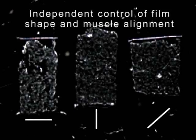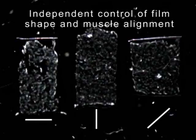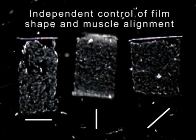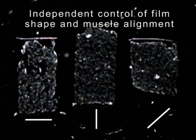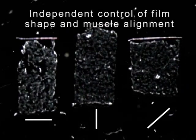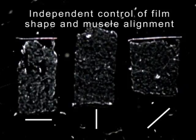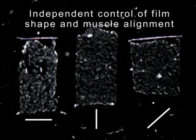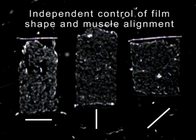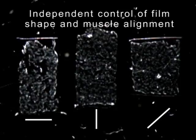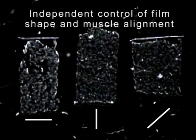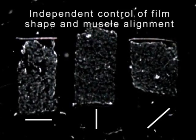This results in independent control of film shape and muscle alignment, allowing us to create muscular thin films that can bend and twist in virtually any direction. For example, rectangles can be engineered to contract along the width, the length, or the diagonal.